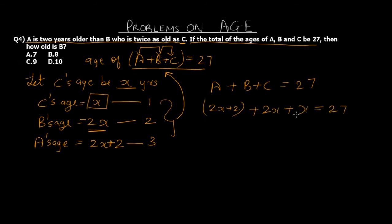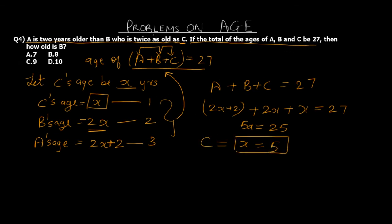Solving the equation: 5x plus 2 equals 27, so 5x equals 25, giving x equals 5. That is C's age. Since B's age equals 2x, B's age is 2 into 5, which equals 10. Option D (10 years) is the final answer. This was a straightforward question.